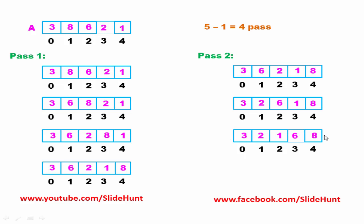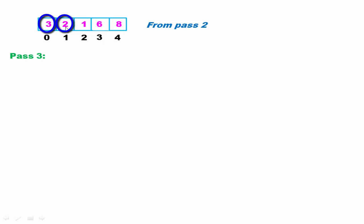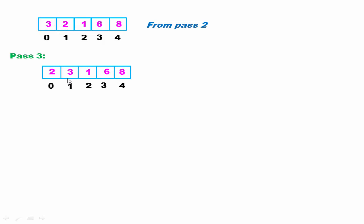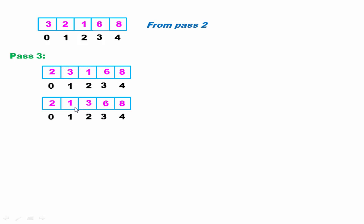If we divide the array into two parts, the left part is sorted and the right part is unsorted. In pass 3, when we compare elements, we don't need to consider the elements in the sorted part — we just compare elements in the unsorted part. In pass 3, we compare 3 with 2. 3 is greater than 2, so we swap. Next, we compare 3 with 1. 3 is greater than 1, so we swap. 1 comes to index 1 and 3 goes to index 2. At the end of pass 3, 3 is at the correct position.